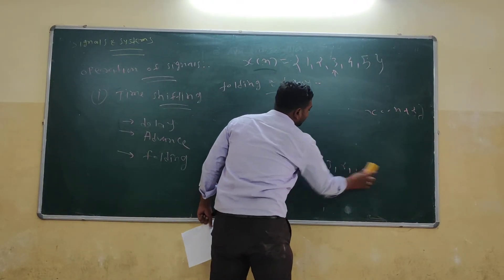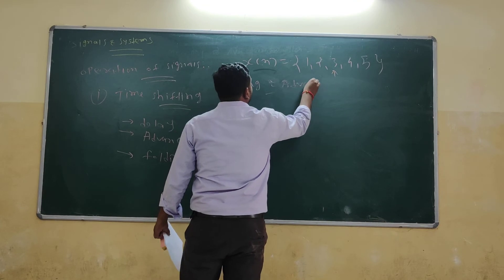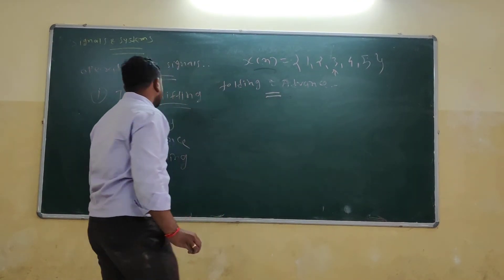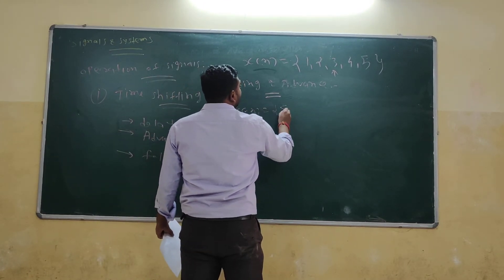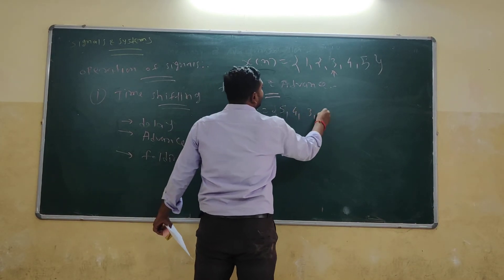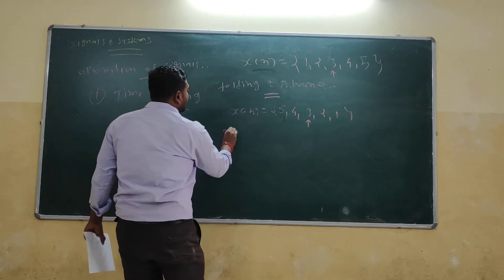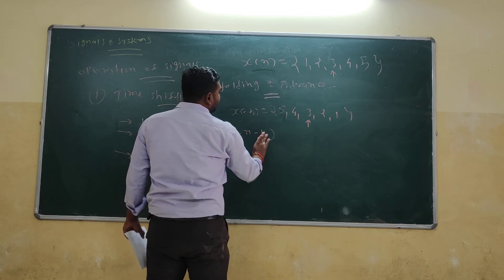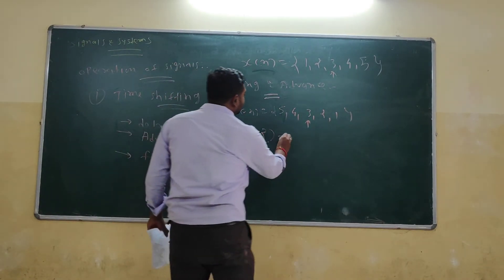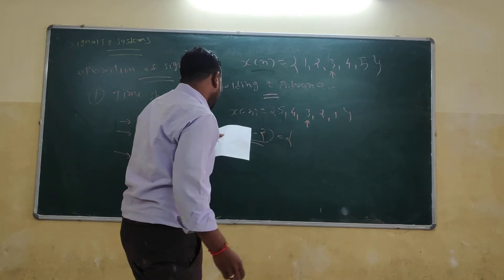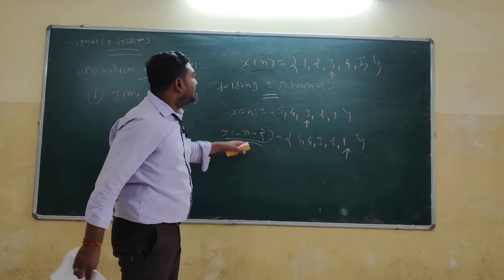The last one is folding and advance signal. You have to first fold the signal: values are 5, 4, 3, 2, and 1, and the arrow is the same as x[n]. Then you have to find x[minus n minus 2], which is called the folding and advance signal. In this signal, the arrow goes to the right side — 5, 4, 3, 2, 1 — so this will be called as folding and advance signal.